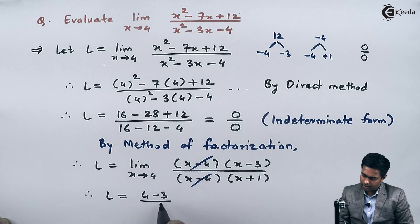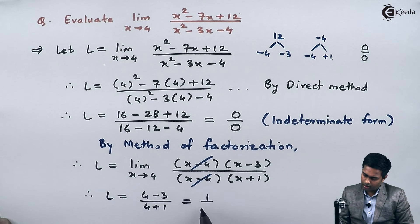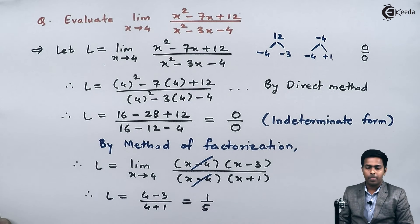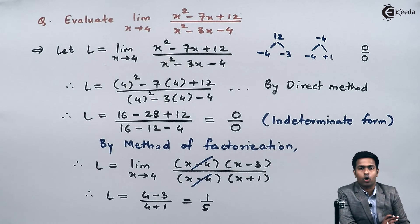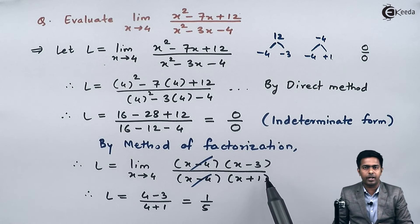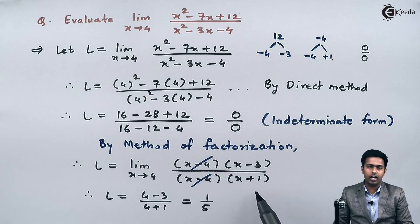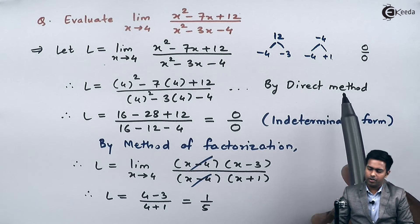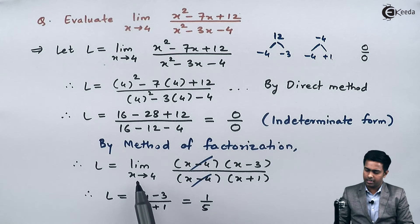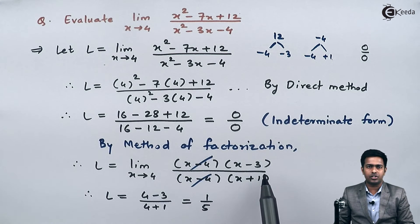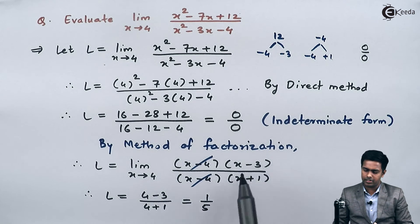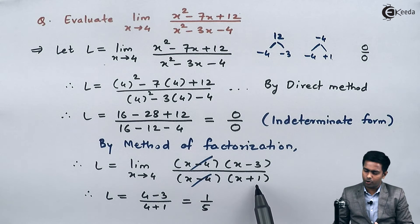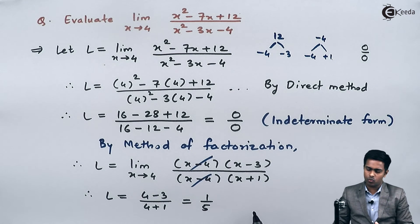After cancelling the common factor, we apply direct method to the remaining term (x - 3)/(x + 1), substituting x = 4 directly. In the numerator we get 4 - 3, and in the denominator 4 + 1, giving the answer 1/5.